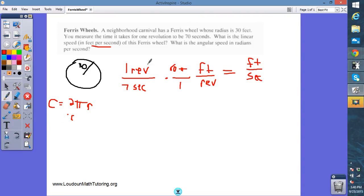So this was we're going one revolution every 70 seconds, times 60π feet per revolution. The one revolution is going to cancel, and we're going to end up with 60π over 70 feet per second.